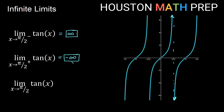Since these are not the same sign of infinity, we say the overall limit as x approaches π/2 of tangent x does not exist. As we approach the vertical asymptote from the left side, from the negative side, we're going up forever. As we approach from the right side, we're going down forever — different directions, so the overall limit does not exist.